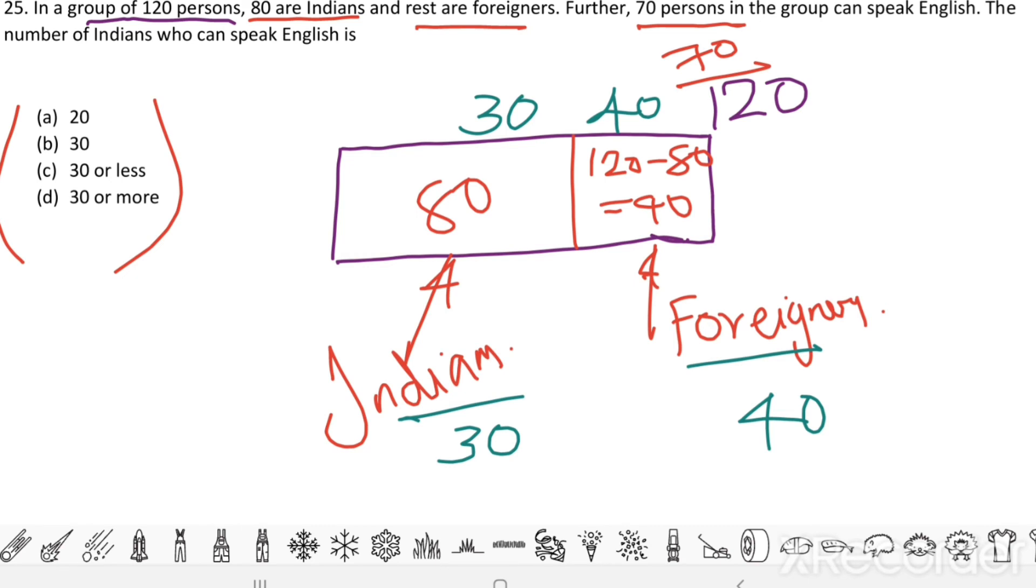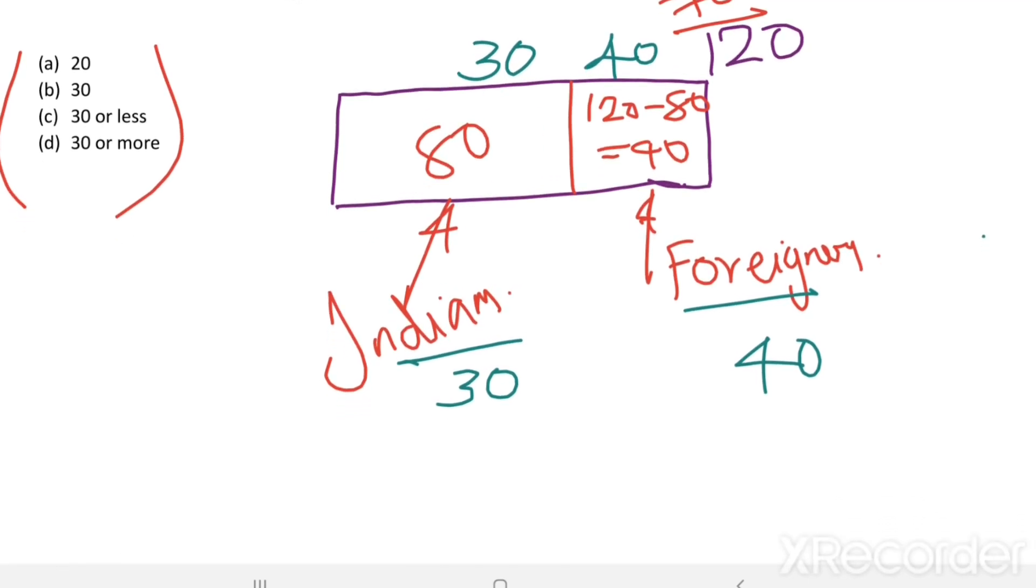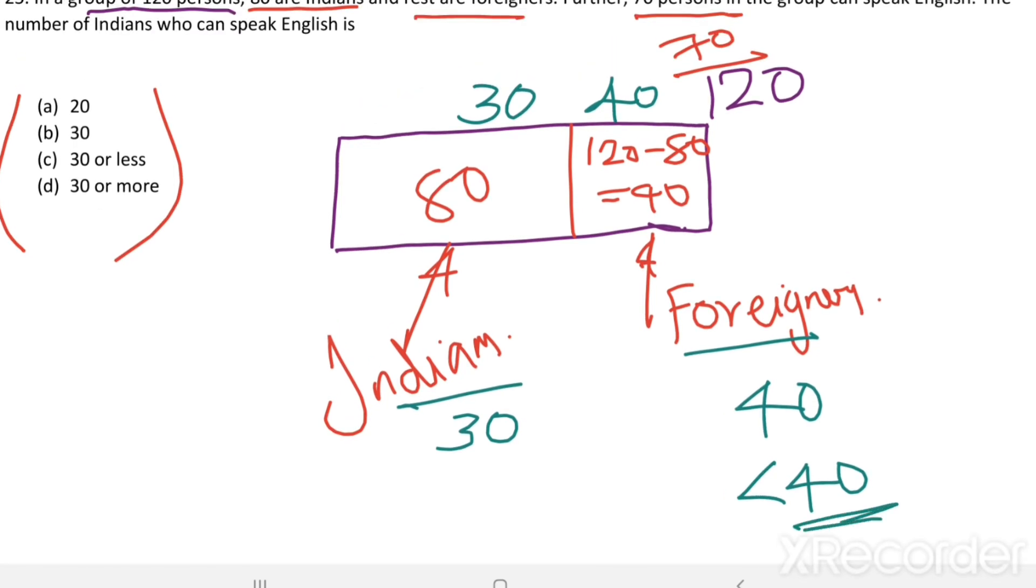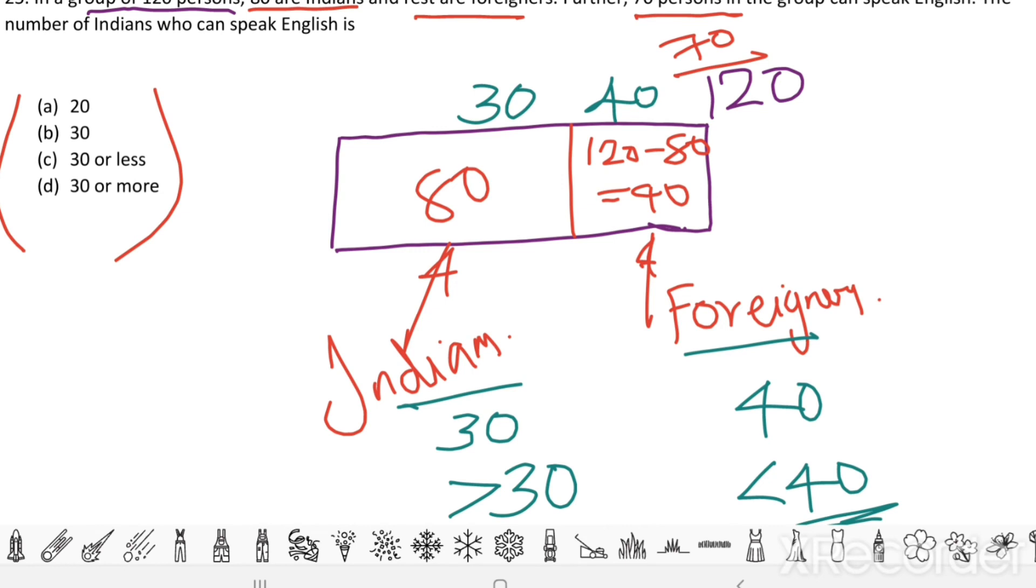If number of foreigners who can speak English is less than 40, then here it is less than 40. Then there should be more than 30 Indians who can speak English. Then only this becomes 70. The total becomes 70.